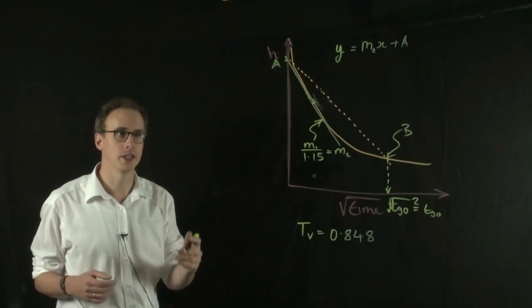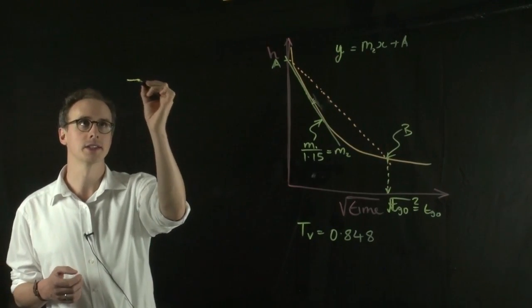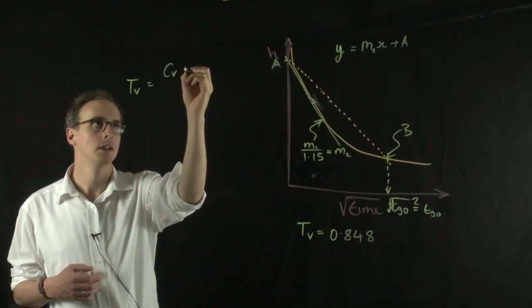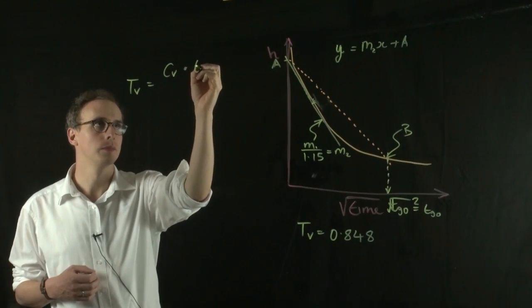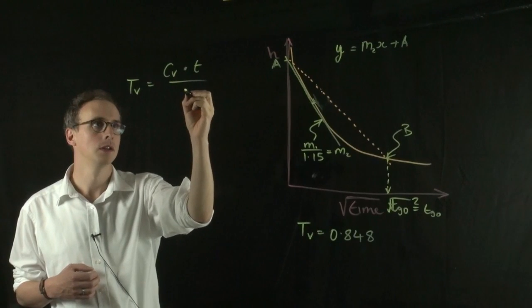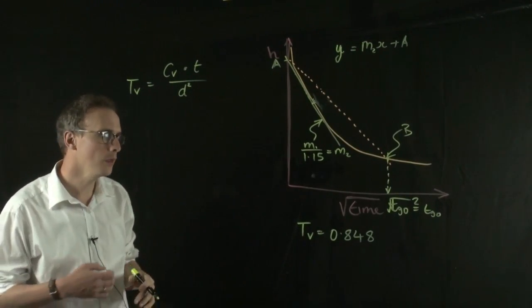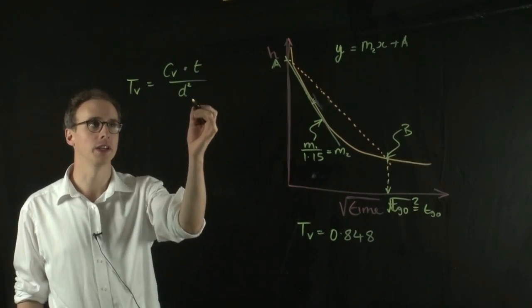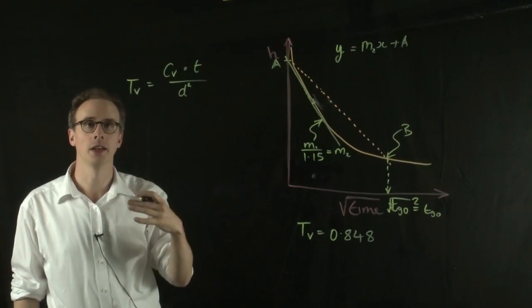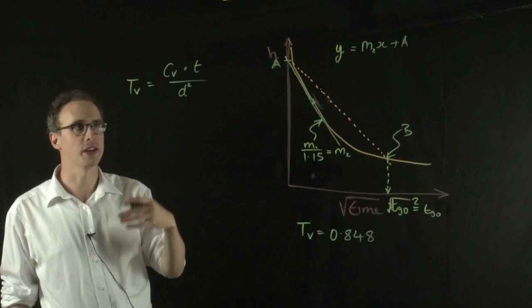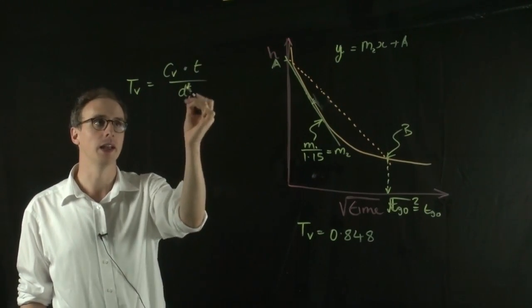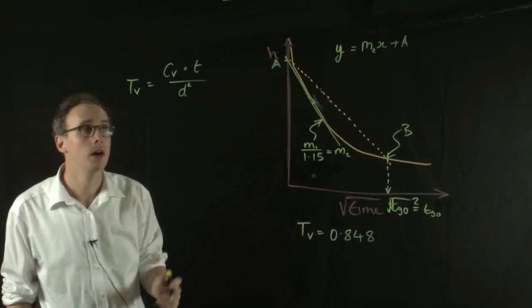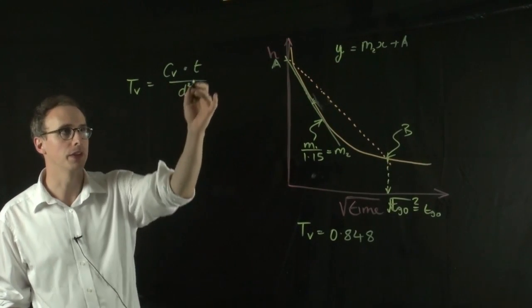Now I can then go back to the equation that relates Tv to Cv T over D squared. Now in an odometer test, I know what the sample thickness is, and I know that it drains from both sides. So I can take the sample thickness and divide it by 2, and I can get my drainage pathway. So I take half my initial sample thickness.